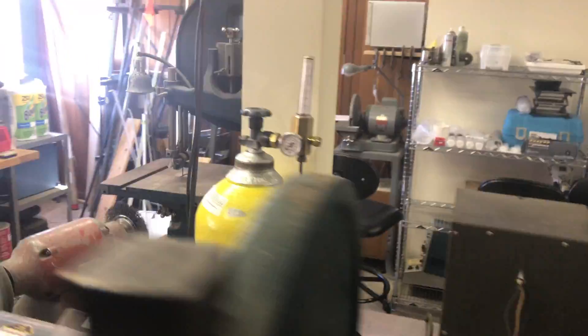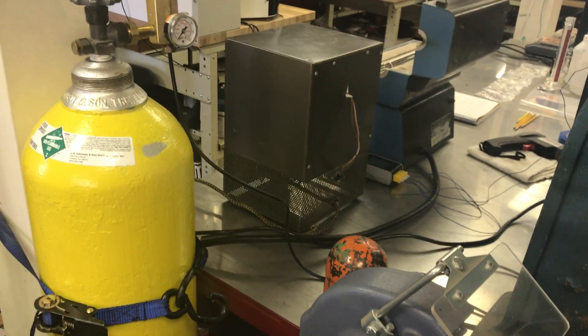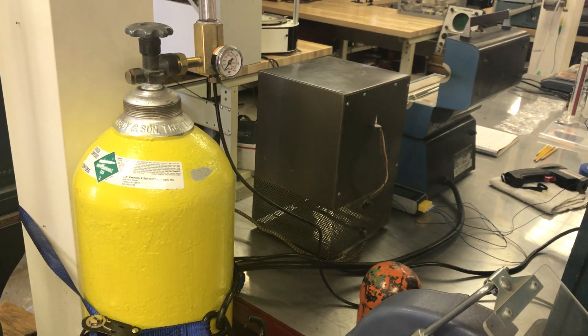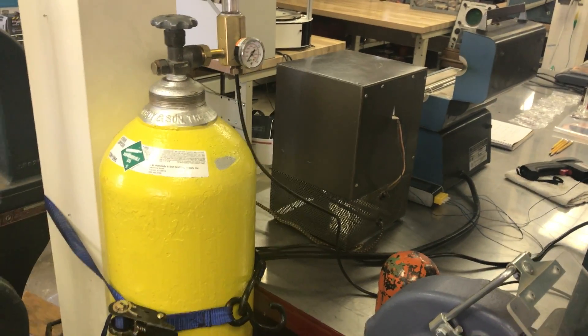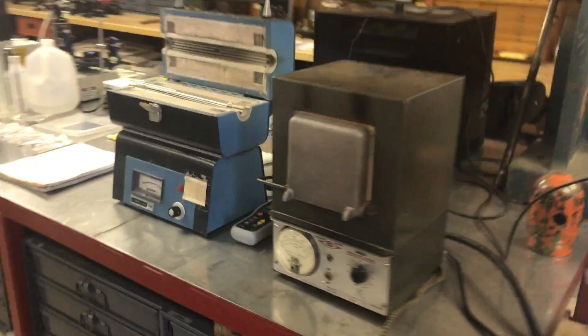And let's go around. This is a nitrogen tank. Use that during diffusion. It's not completely necessary for proof of concept devices but it really helps out the electrical characteristics if you can purge nitrogen through the furnace while you're doing diffusion.